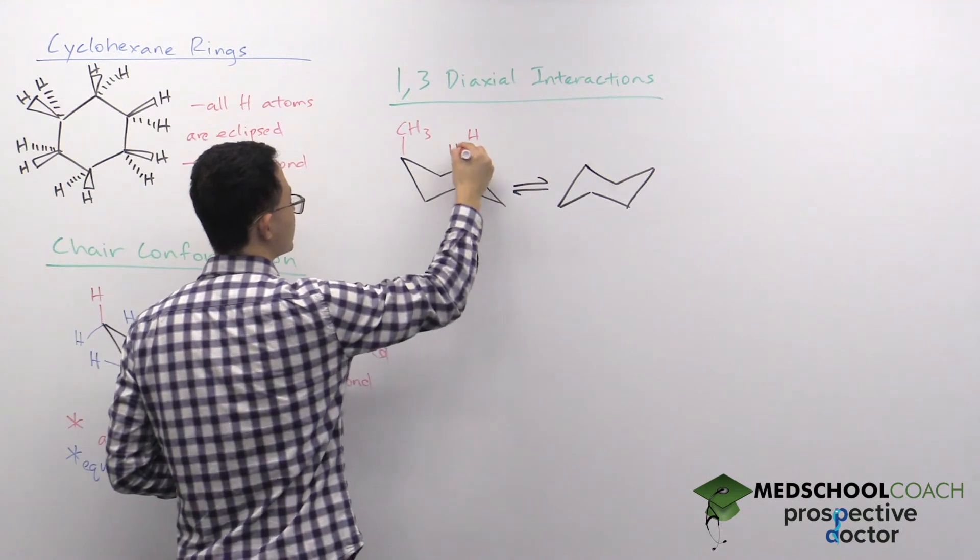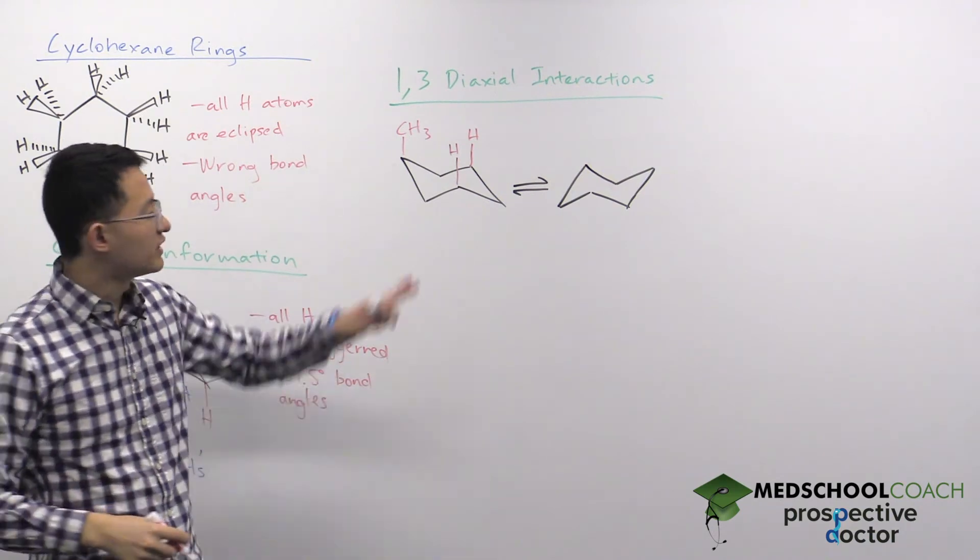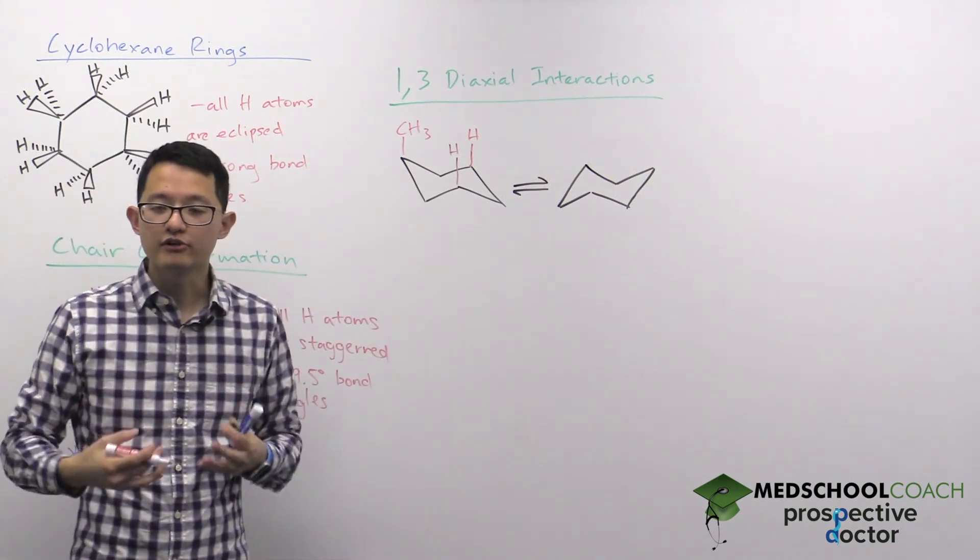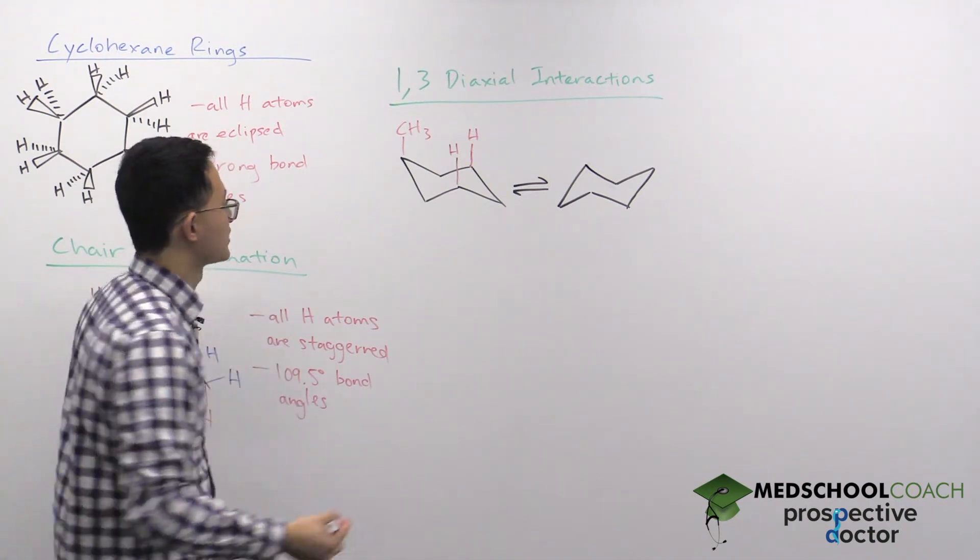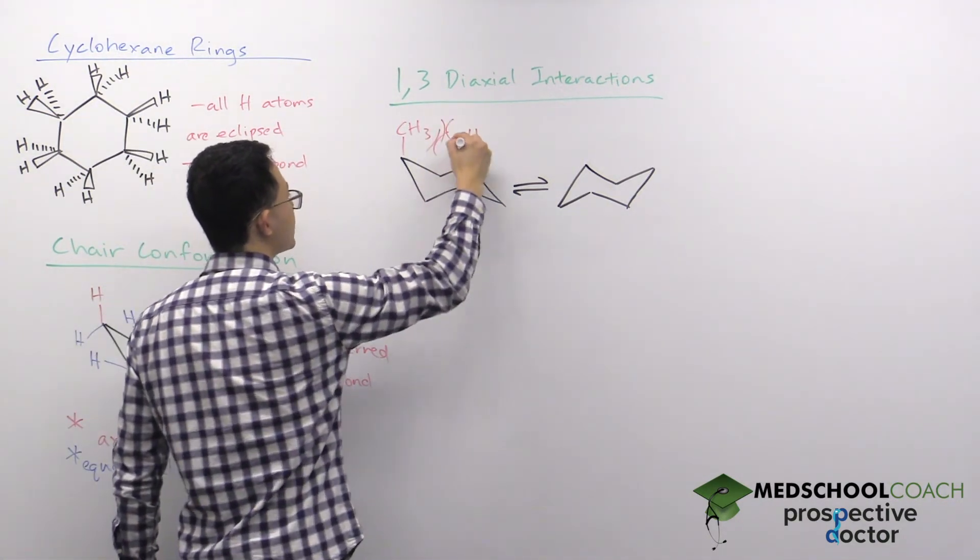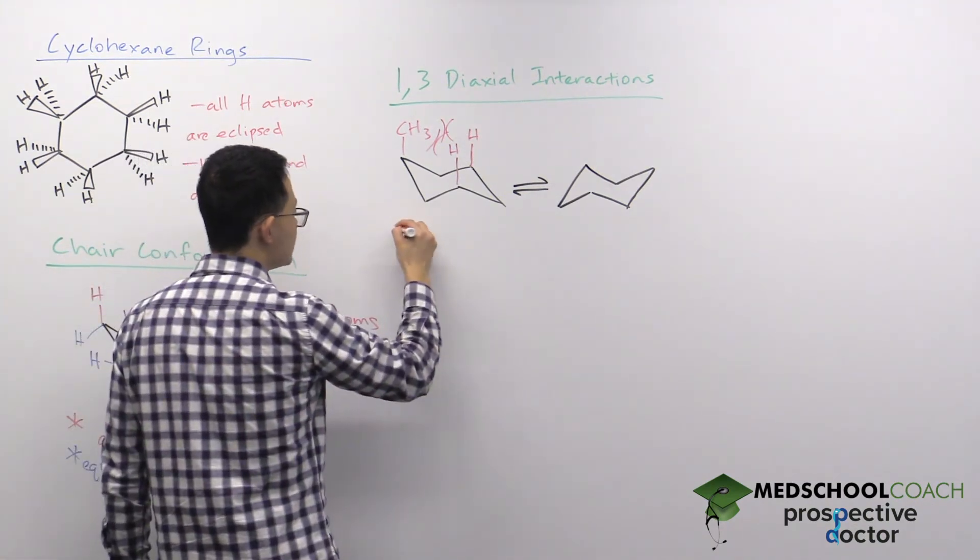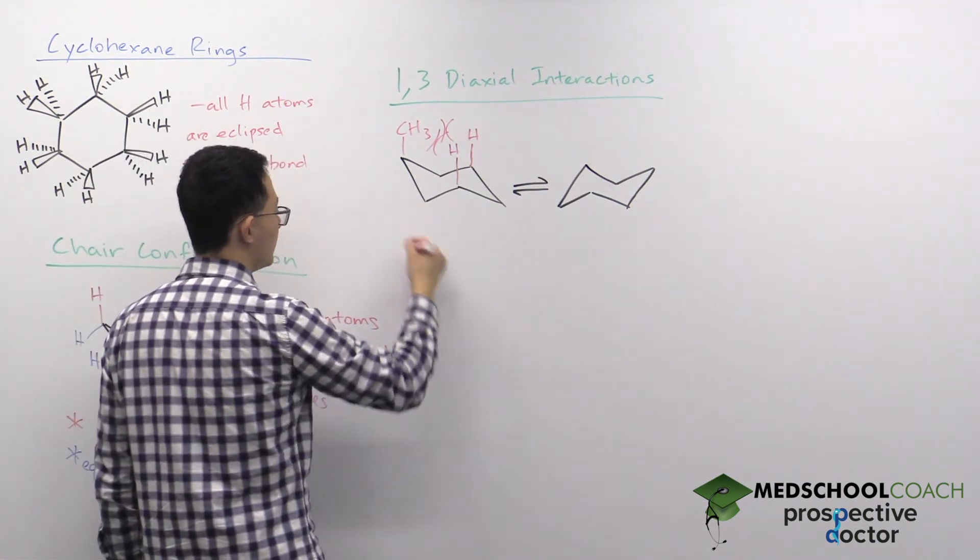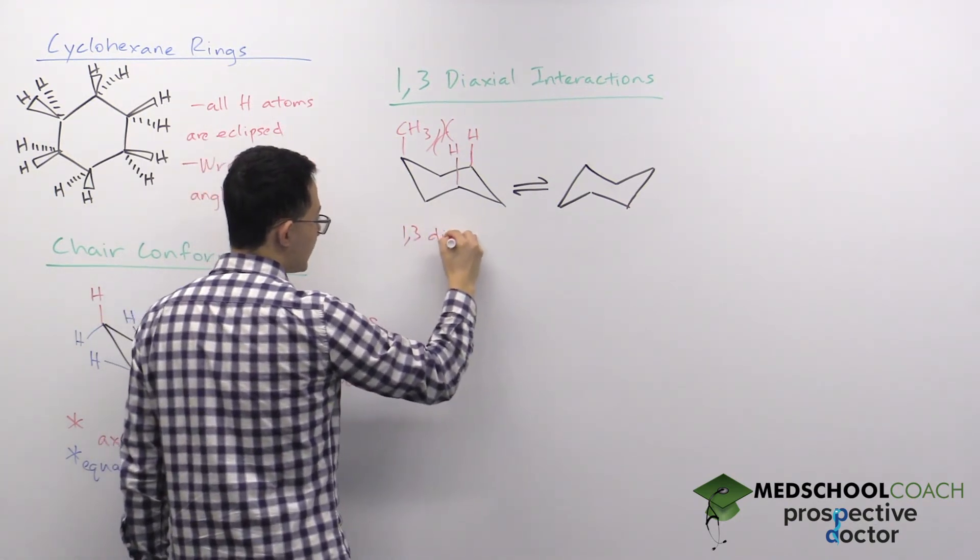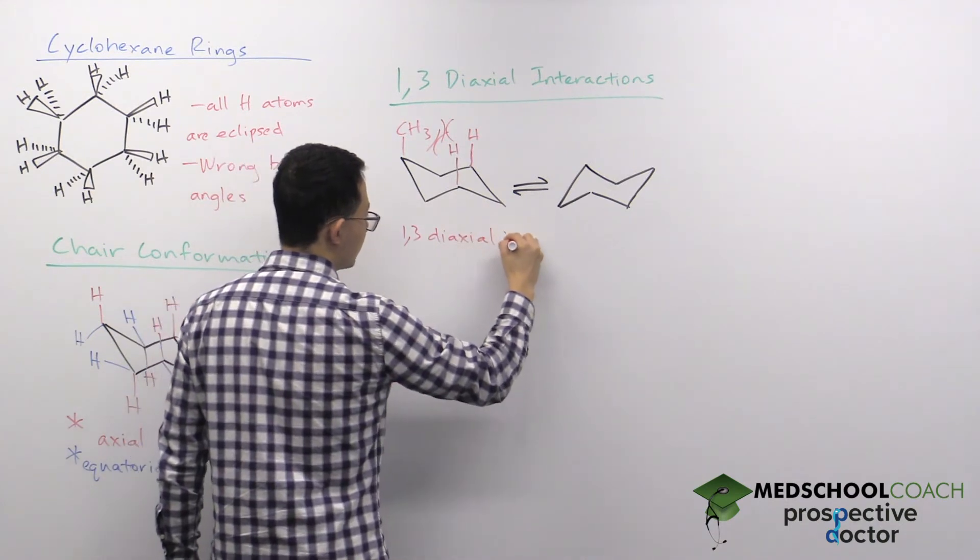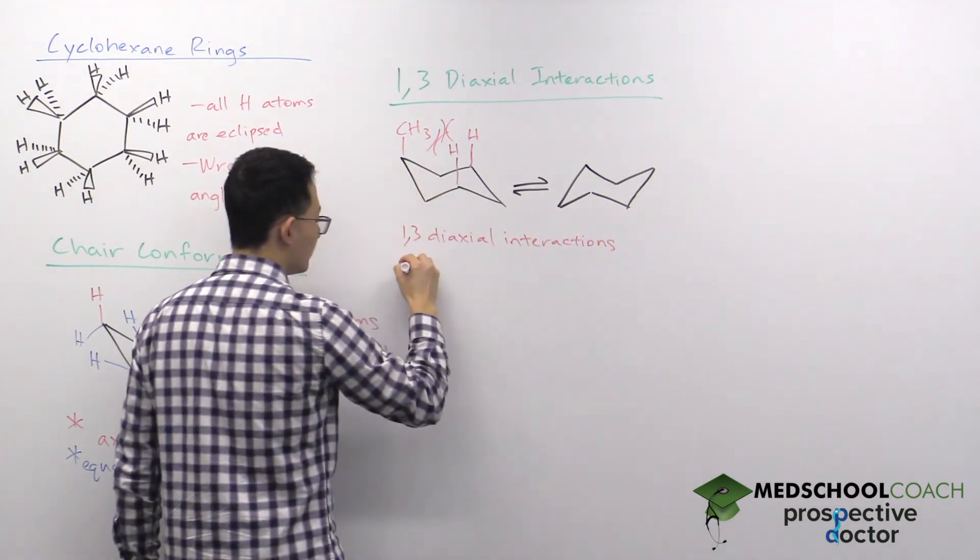These groups are all axial, and when you have a large substituent, they're close enough to each other that you have steric interactions. This is what we refer to as 1,3-diaxial interactions, and this is unfavorable. We can make a note here that 1,3-diaxial interactions are unfavorable.